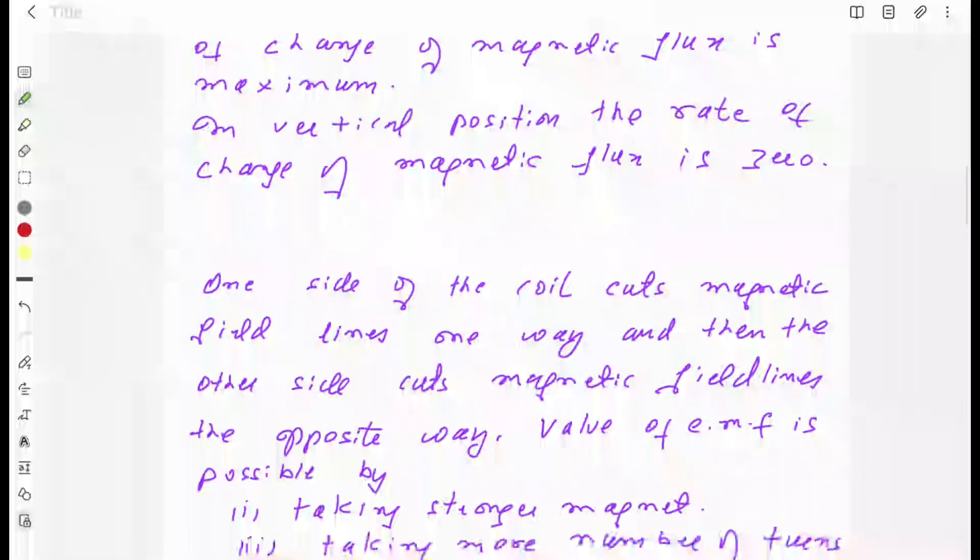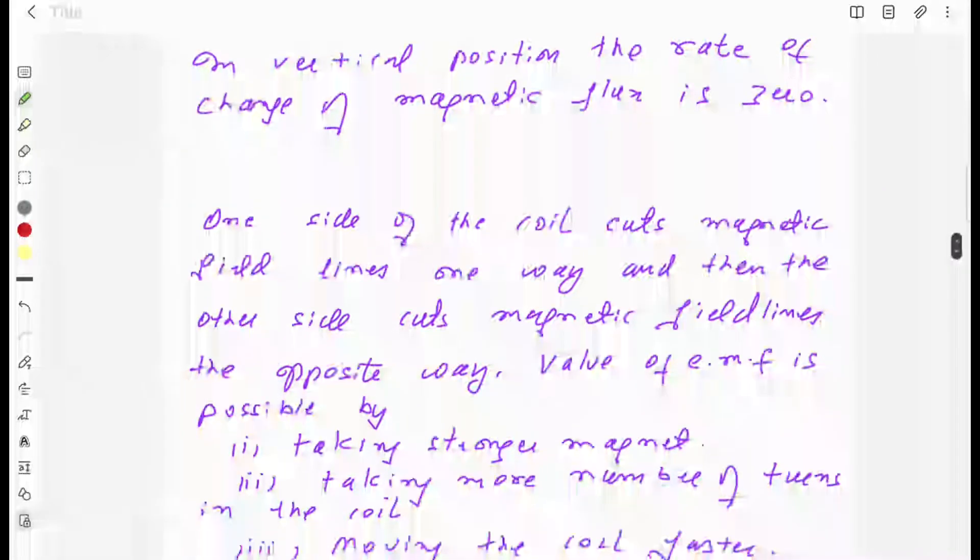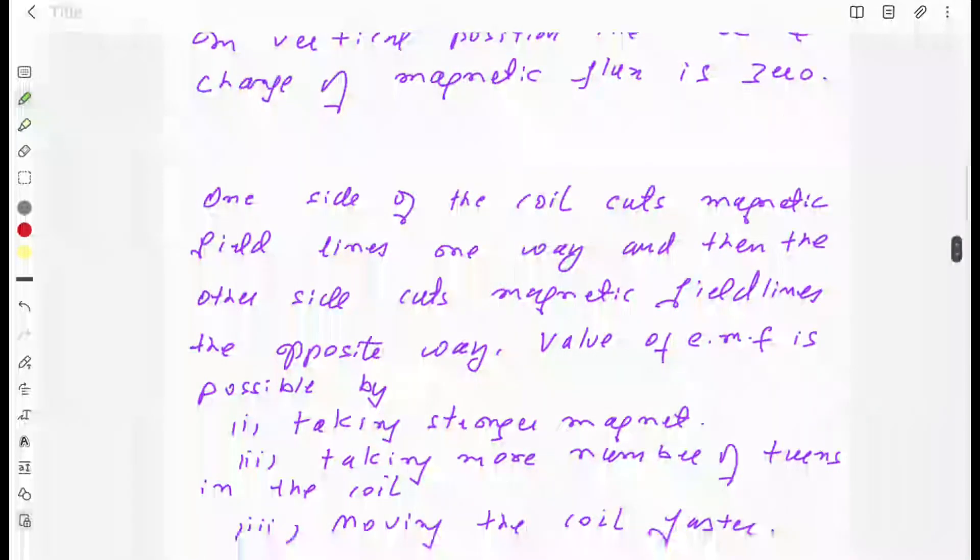The value of EMF can be increased by taking a stronger magnet, by taking more number of turns in the coil, and by moving the coil faster.